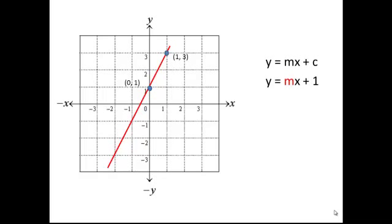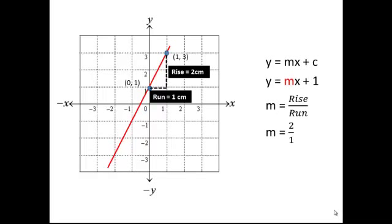We then need to determine the vertical and horizontal distances between these two points. These are otherwise known as the rise and the run. We can then see that the rise is 2 centimetres, while the run is 1 centimetre. We then substitute these values into the equation for gradient on the right. This gives us 2 divided by 1,